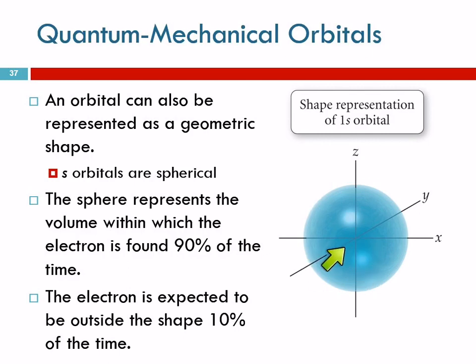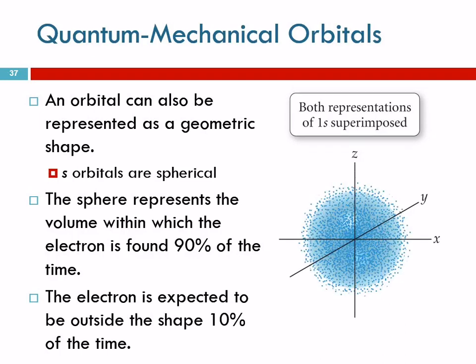So this is representing a volume in which the electron could be found 90% of the time. But 10% of the time, we expect, we fully expect the electron to be out of there, somewhere else. And it doesn't even have to be that close. It could be over here. That's possible.